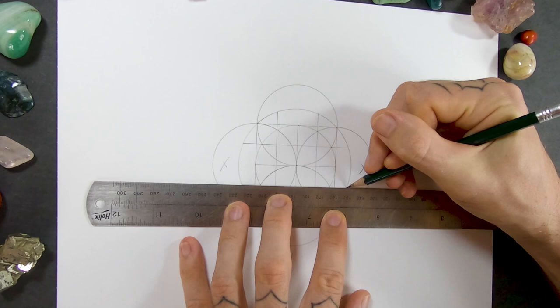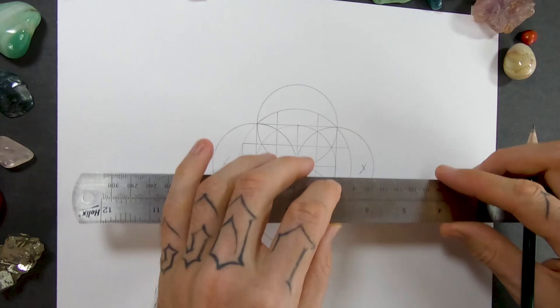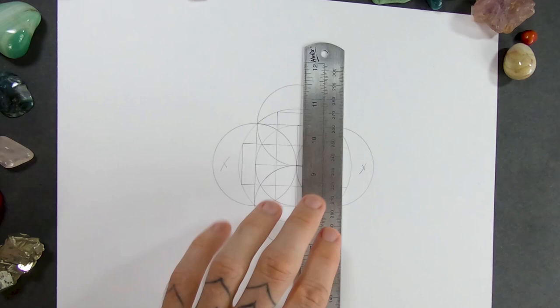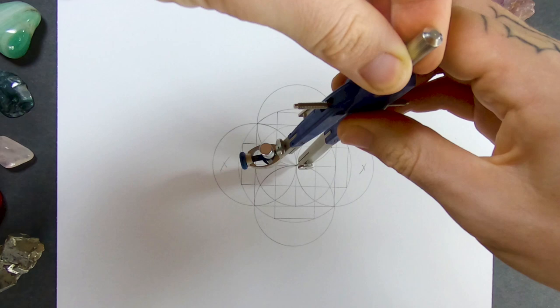Now I can connect these intersections on the outside circle. Then I can use this new cross section to draw a small circle in the center.